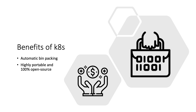Automatic bin packing means we can specify the compute power — CPU and RAM — needed for each container, similar to a virtual machine. We can allocate how much RAM, CPU, and storage each container is allowed to use, and Kubernetes will manage those resource constraints accordingly.